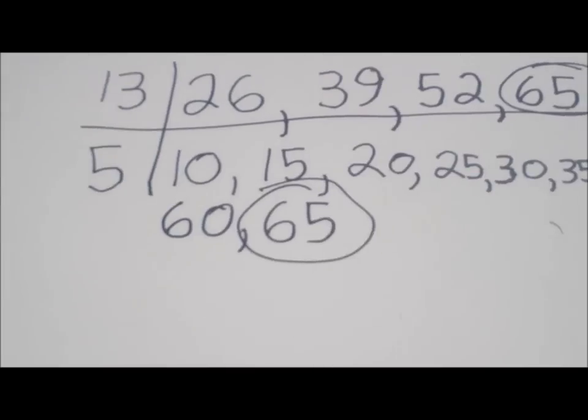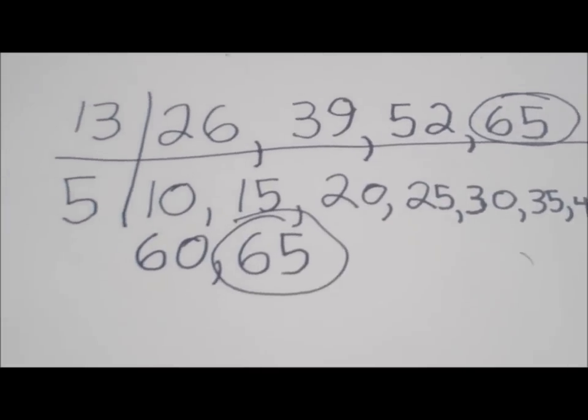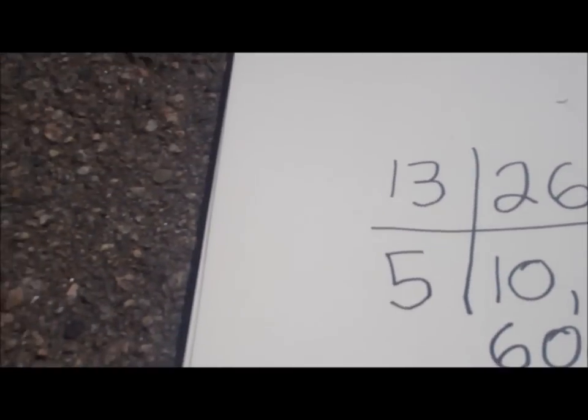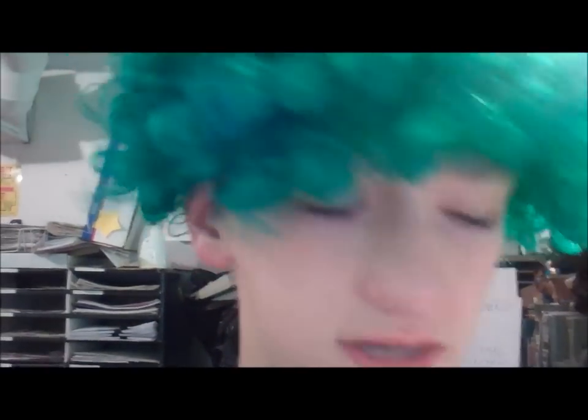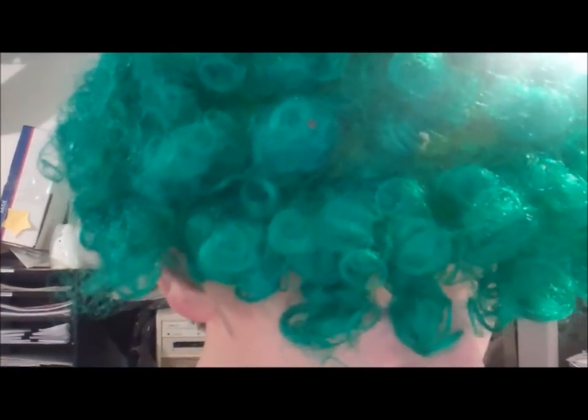The least common multiple of 13 and 5 is 65. Is 13 divisible by 2, 3, 5, 6, 9, or 10? No, it is not. 13 is a prime number, so its only factors are 1 and 13.